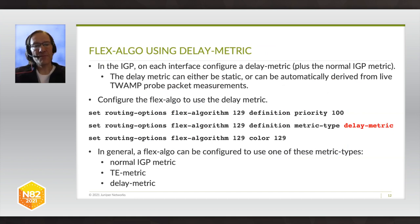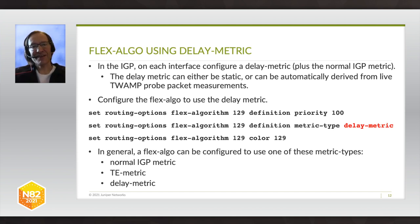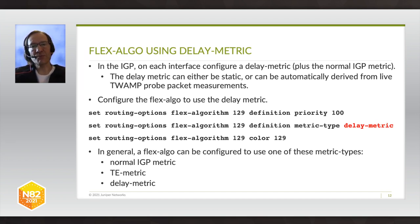In general, you can choose what style of metric you want for a given Flex-algo. In this example, the Flex-algo has been defined to use a delay metric. That delay metric can be either statically set, if the delay of a given link isn't expected to change much, or it can be a dynamically changing metric according to TWAMP measurements. IGP neighbors send timestamp probe packets to each other to determine link latency, and that's fed into the metric value advertised via IGP flooding for that link. In general, you can map a Flex-algo to use either a delay metric, a TE metric, or a normal IGP metric according to your requirements.